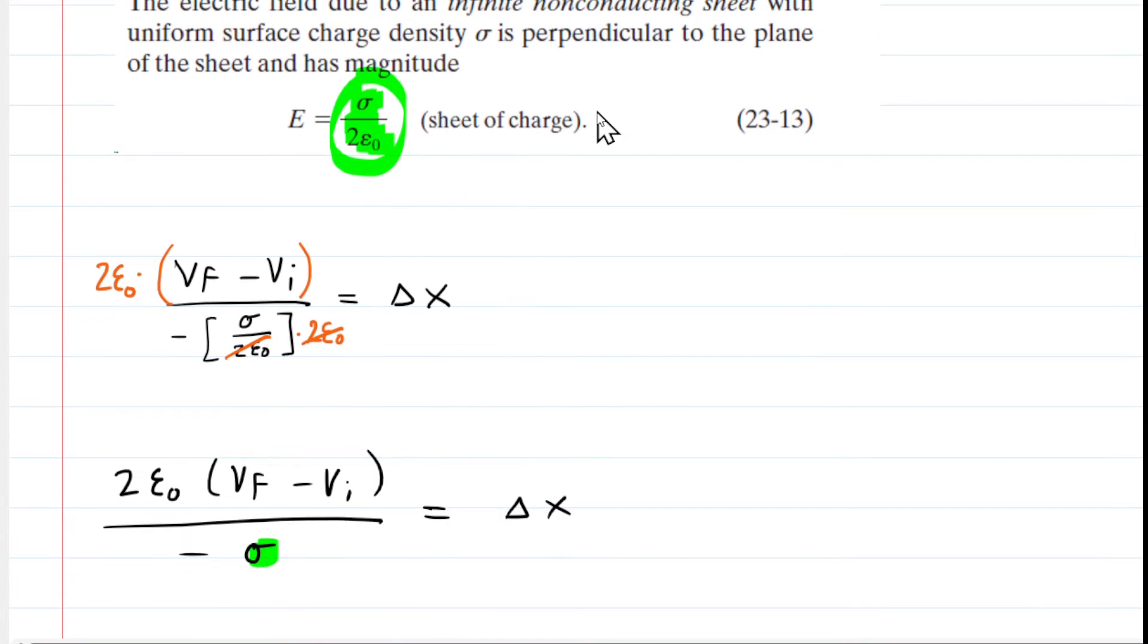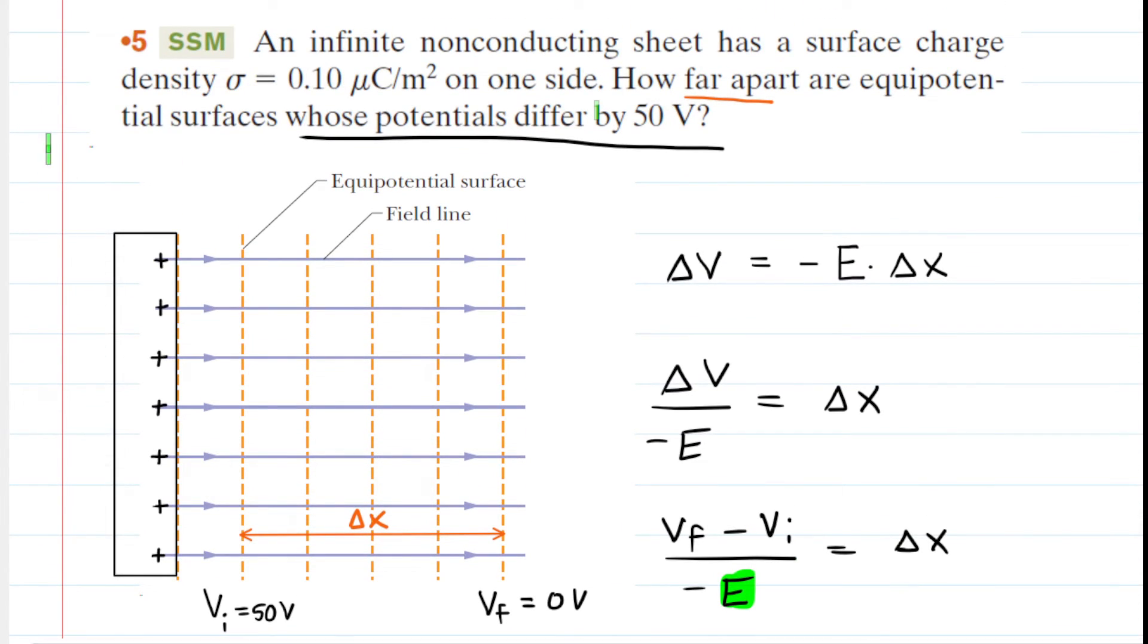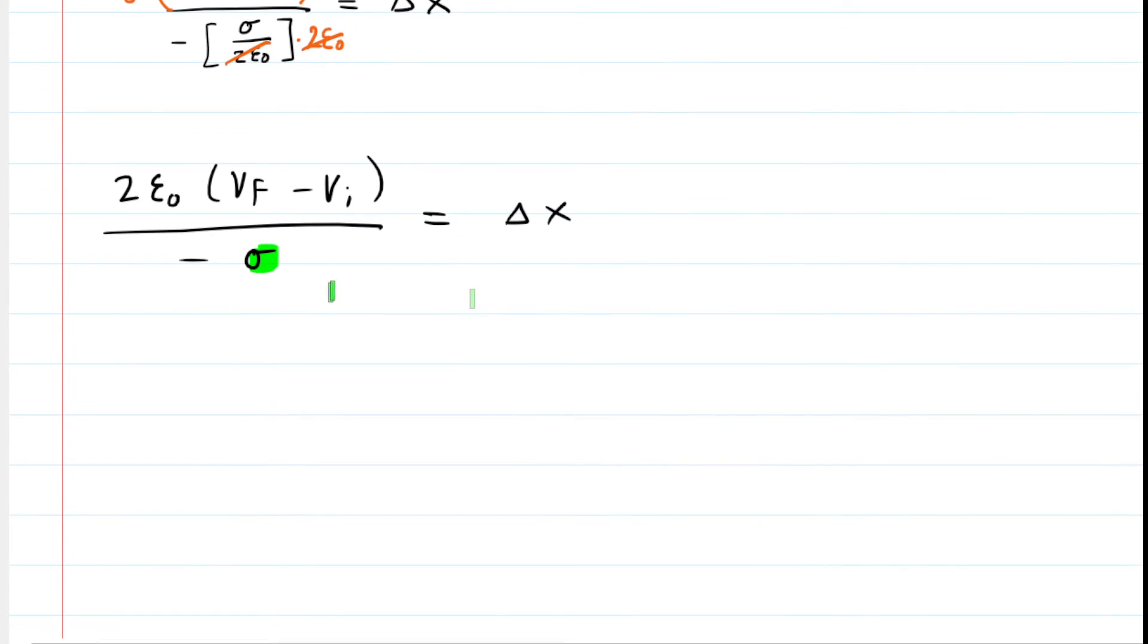The only thing we might wish to address is the meaning of this sigma right here. That is what's called the surface charge density. And the question actually gave us the surface charge density right here. They gave it to us in micro coulombs. So we're going to have to multiply that by 10 to the minus sixth in order to get it into the standard unit of coulombs. Let's go ahead and plug in all the known values.